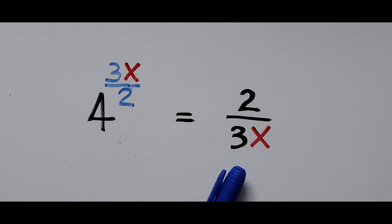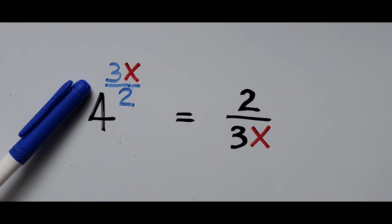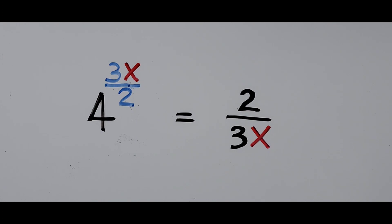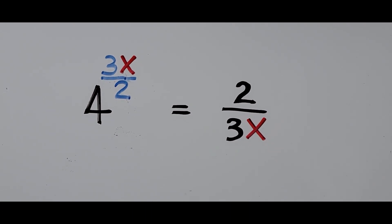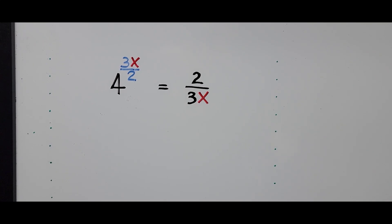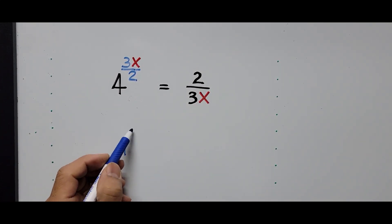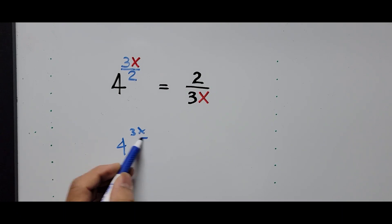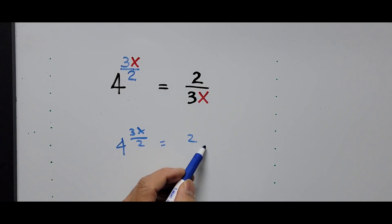If we take a look at the exponent and compare the right side of the equation, this is the exact reciprocal of the exponent on the left side. We'll be using the rules of exponents to find the value of x. So: 4 to the power of 3x divided by 2 equals 2 divided by 3x.